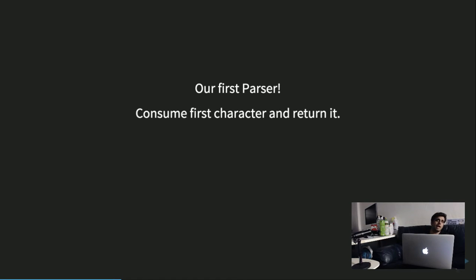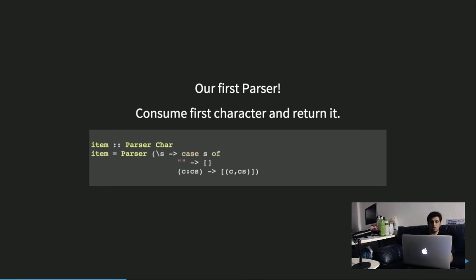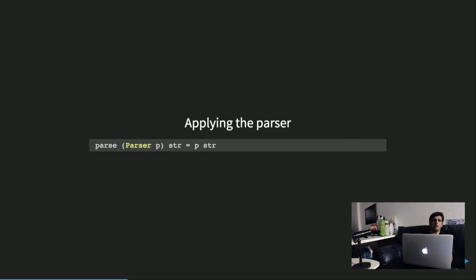Let's define our first parser. It's going to consume the first character in a given input and return just that character. Its type is Parser Char, and its parsing function pattern-matches on the string: if the string is empty, return empty list — failure. Otherwise, return the first character of the string paired with the rest. To apply this parser on some input, I define a parse function to unwrap the parsing function and apply it on a string.